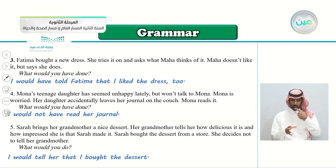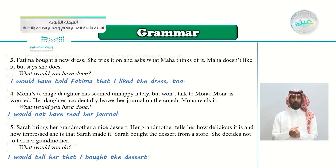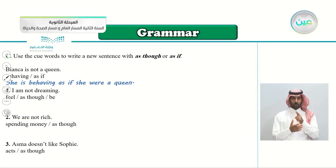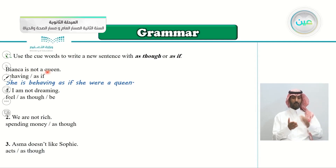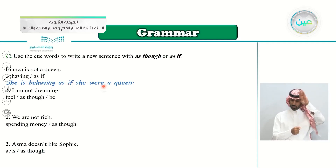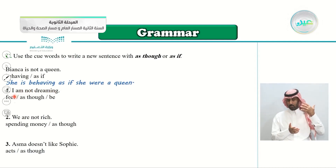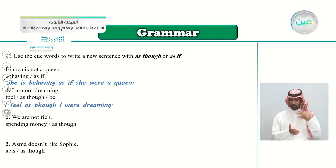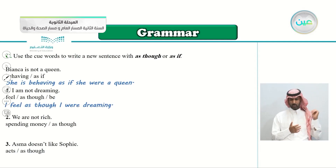Exercise C: use the keywords to write a new sentence with 'as though' or 'as if.' Example: Bianca is not a queen — 'She is behaving as if she were a queen.' Number one: 'I'm not dreaming' — feel as though — Answer: 'I feel as though I were dreaming.'